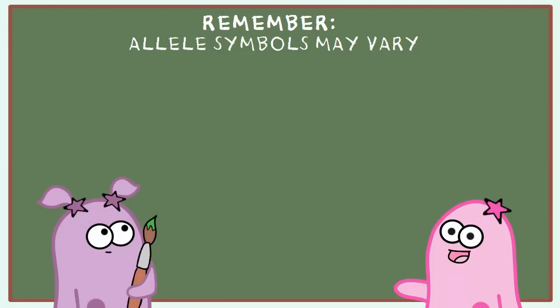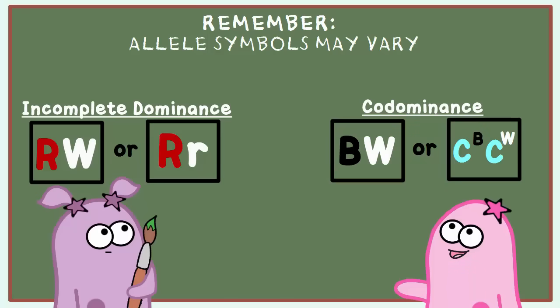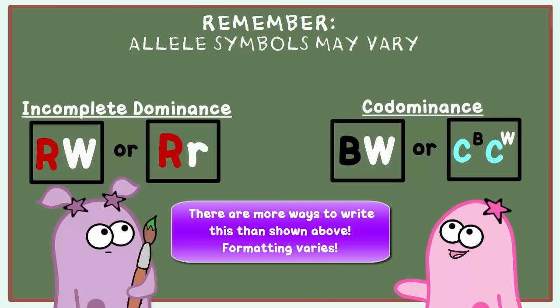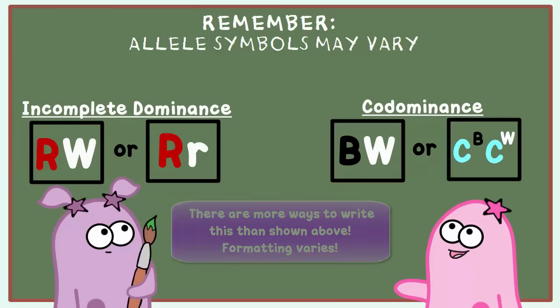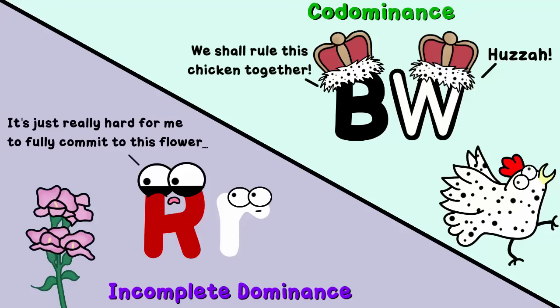You will find that many people use different formatting for incomplete dominance and co-dominance. Some people like to use different letters entirely for incomplete dominance, and some don't. Some also prefer to use exponents with co-dominance. Formatting aside, the real concept is that in incomplete dominance, one allele is not completely dominant over the other, so you see this almost in-between phenotype. In co-dominance, both alleles are expressed. It's the application that matters here.